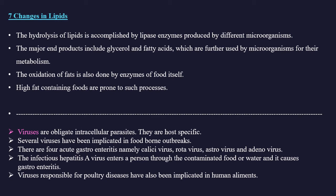Apart from bacteria, yeast, and molds, some viruses are also observed in food. Viruses are obligate intracellular parasites and are host-specific, but several have been implicated in foodborne outbreaks. Four viruses causing gastroenteritis are: calicivirus, rotavirus, astrovirus, and adenovirus. The infectious hepatitis A virus enters a person through contaminated food or water and causes gastroenteritis. Viruses responsible for poultry disease have also been implicated in human ailments.